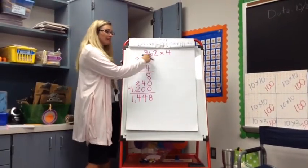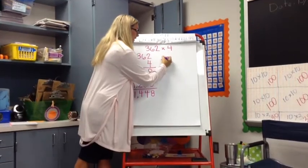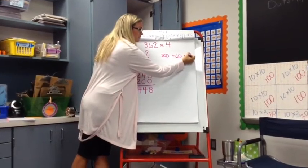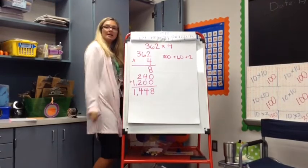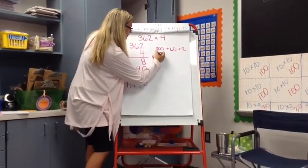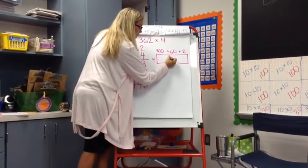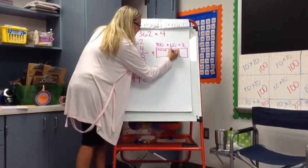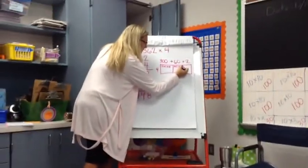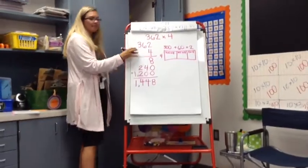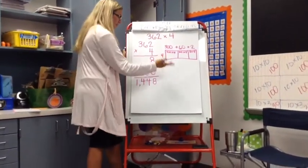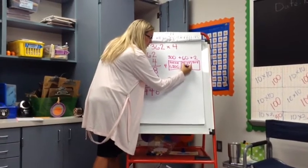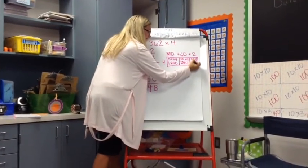Watch — I can do the same thing through an area model. What is 362 in expanded form? It is simply three hundred plus sixty plus two. What is four in expanded form? Just four. So I'm going to do three hundred times four, sixty times four, and two times four — which gives me the exact same partial products: three hundred times four is one thousand two hundred, sixty times four is two hundred forty, and two times four is eight. The same three partial products.